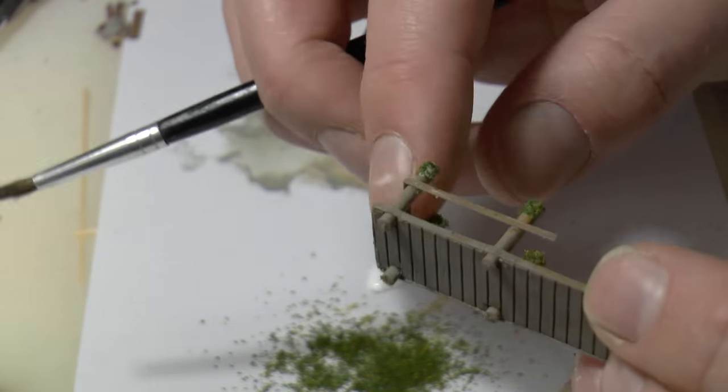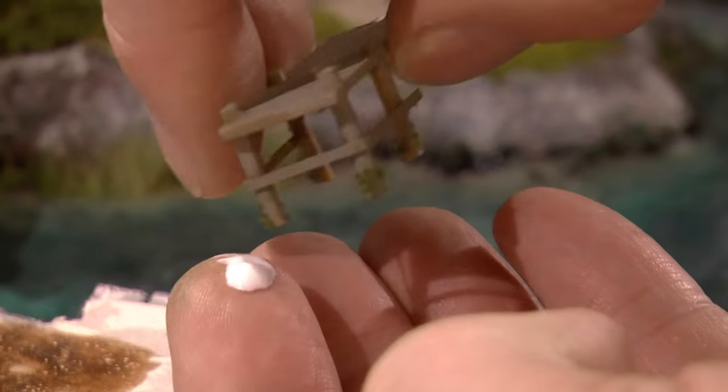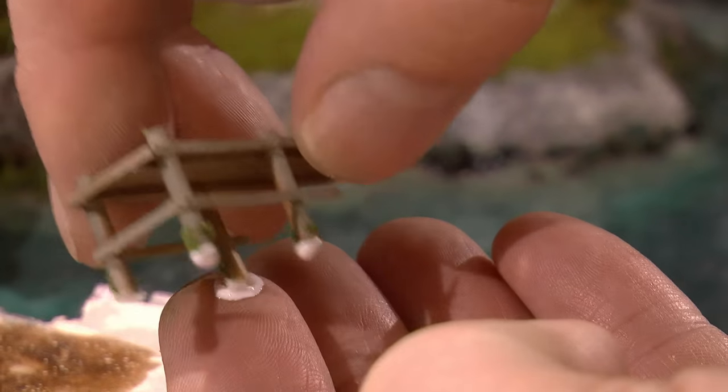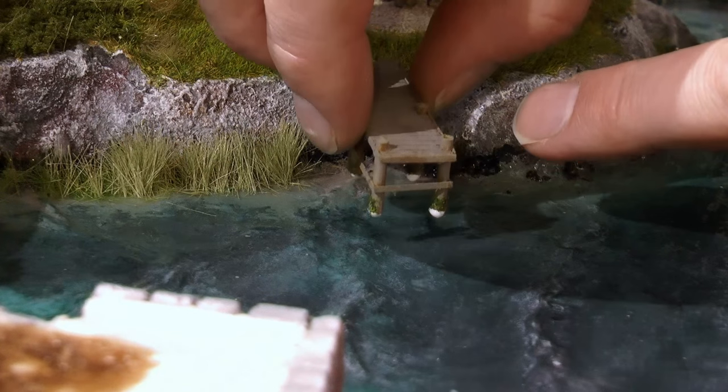All right, now it's ready to be placed on layout, and for that purpose we'll put some more glue onto our now pretty sticky fingers and we apply that glue on the bottom of the beams. And then we place it where we want it on the layout and remove excessive glue.